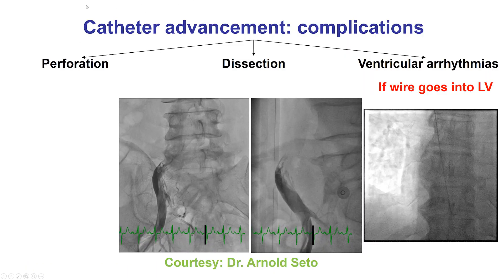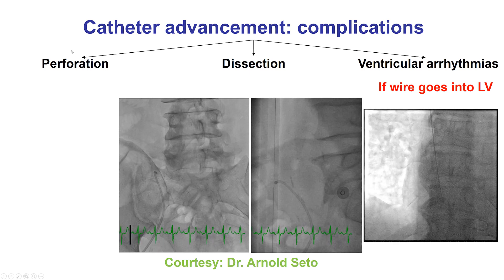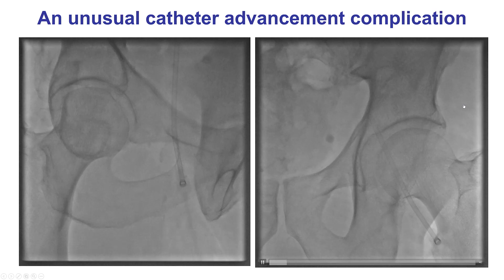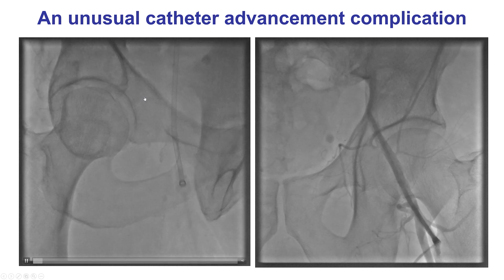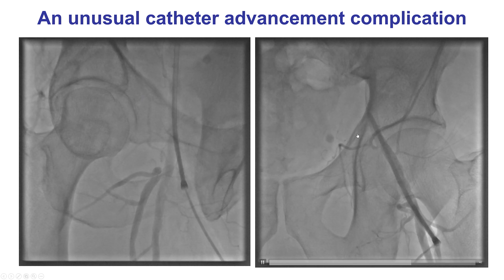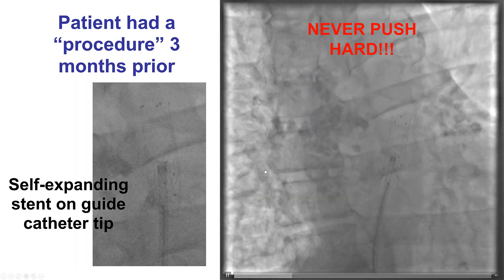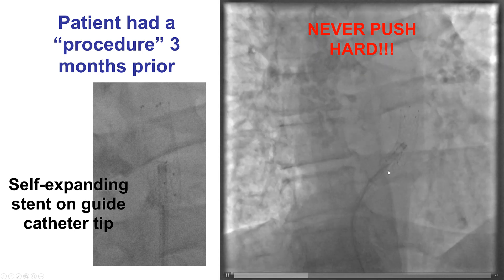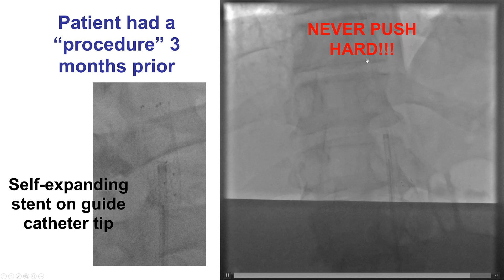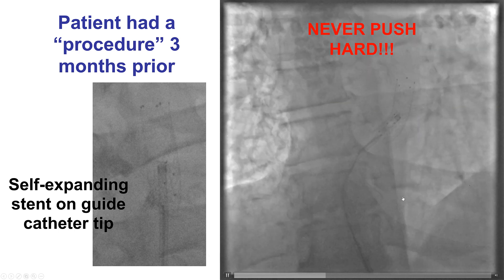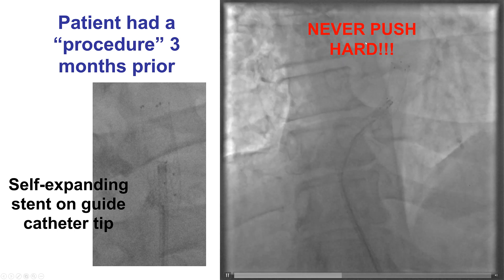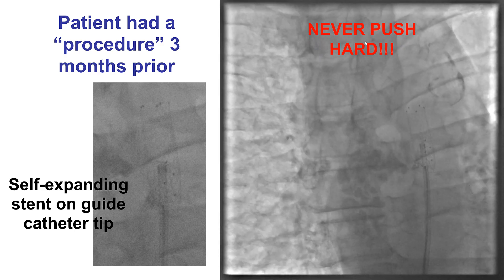Advancing a catheter can have complications similar to those when advancing a guide wire: perforation, dissection, and ventricular arrhythmias if the guide wire goes into the left ventricle. This is another unusual complication: a patient prepared for CTO intervention had bilateral femoral access obtained. There was some resistance in advancing the catheter, and what we see is a peripheral stent that was stripped from the iliac artery all the way into the ascending aorta, now freely embolizing into the aorta. This makes the point very convincingly: never push hard when advancing a guide wire and catheter for coronary angiography and PCI.